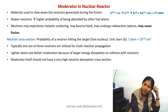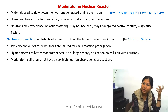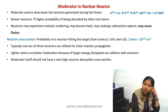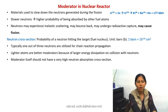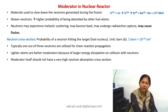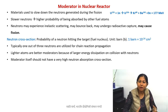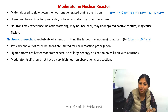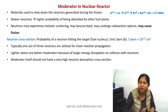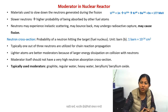Another required property is that the moderator itself should not completely absorb the neutrons. Control rods will completely absorb the neutron, while the moderator just slows them down. Control rods are made of materials such as boron and cadmium. Your moderator should slow the neutron down but should not absorb it completely.